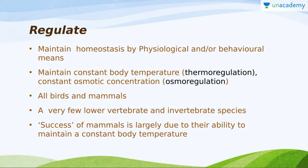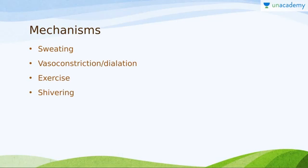Organisms that can maintain their body temperature or osmolarity on their own through internal physiological or behavioral means are called regulators. All birds and mammals — the warm-blooded animals — are regulators. The success of mammals on this planet is mainly due to their capacity to regulate and maintain a constant body temperature; you can find mammals in polar regions as well as hot deserts. Mechanisms include sweating for evaporative cooling in hot conditions, vasoconstriction to reduce heat dissipation when it's cold, exercise, rubbing hands, and shivering — which is involuntary muscle contraction that generates heat.